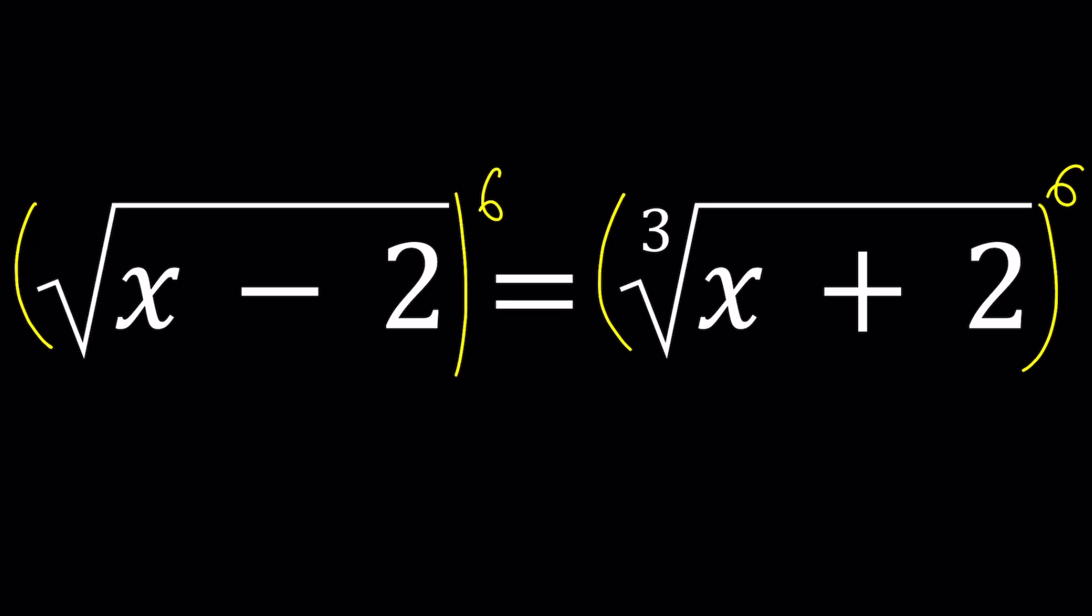First of all, if you have the square root, that would mean something to the power 1 half, and 6 times that is going to give us a 3. So this left-hand side is going to become x minus 2 to the 3rd, and the right-hand side is going to be x plus 2 to the power 6 over 3, which is x plus 2 to the 2nd power.